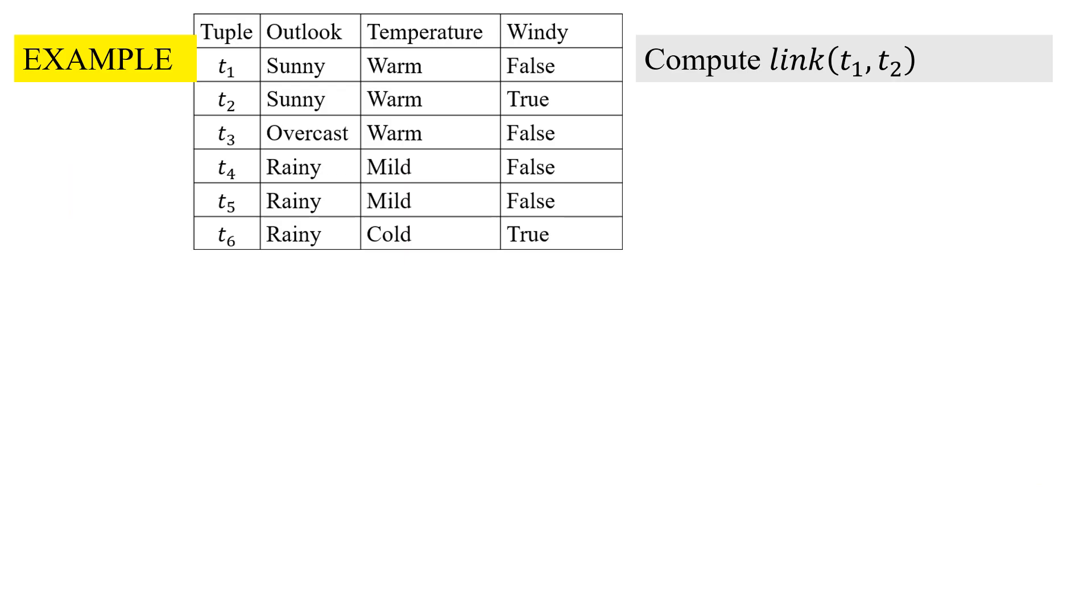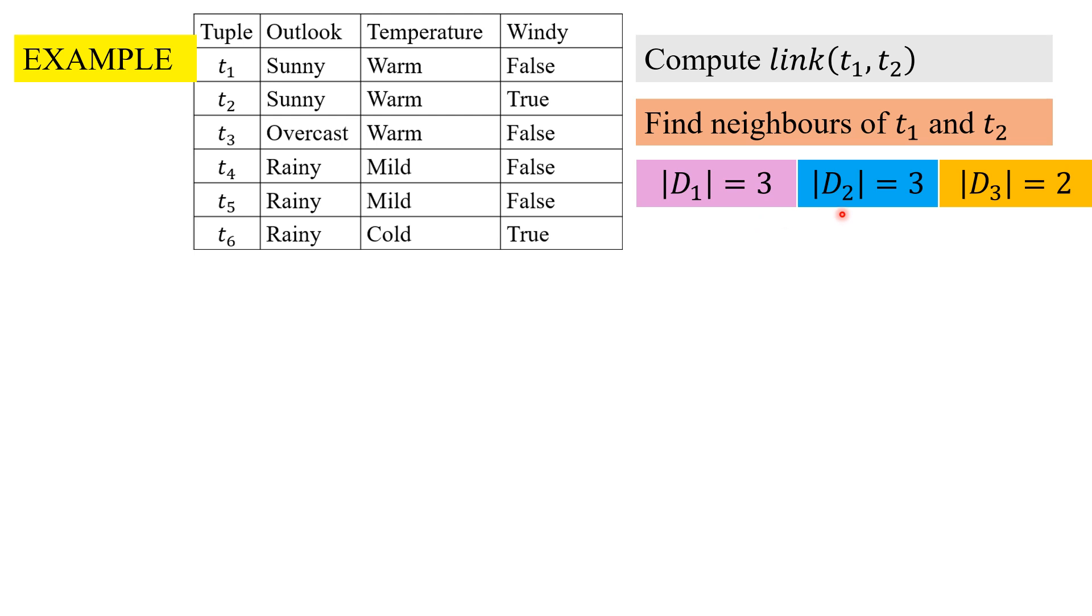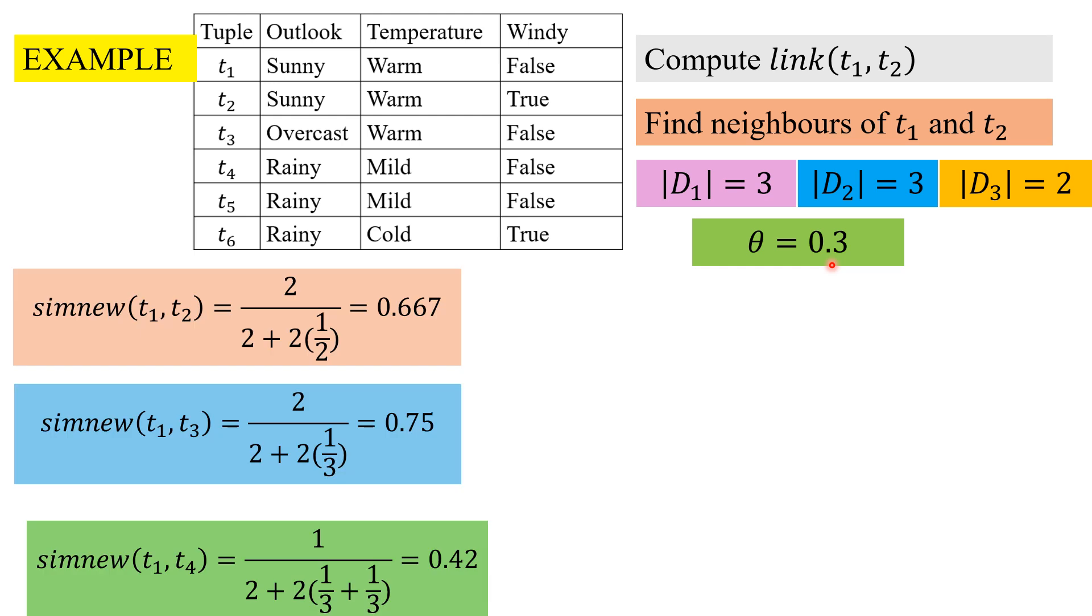Now we take the same example and see how we can compute the link between t1 and t2. For that, first the neighbors of t1 and t2 have to be found because the link value is the number of common neighbors. The domains are as discussed earlier and the theta value given to us is 0.3. To compute the link we need neighbors, for that we need the similarity. We will check similarity of t1 with respect to t2, t3, t4, t5 on all.